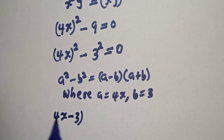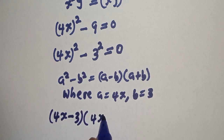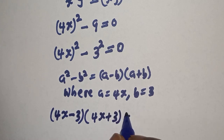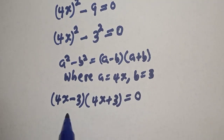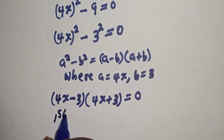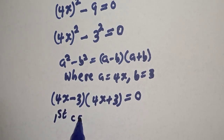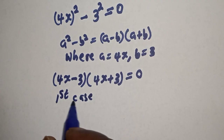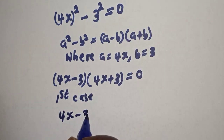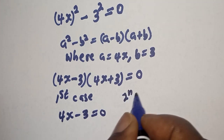(4s - 3) multiplied by (4s + 3) is equal to zero. There are two cases here. The first case: 4s - 3 = 0. And the second case: